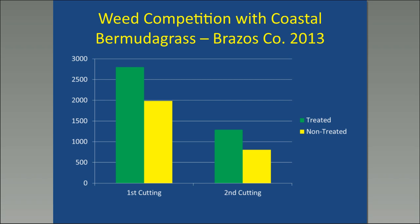So why do we worry so much about weeds? Why do we spend so much time and effort trying to keep weeds out of our fields? This study we did in the Brazos Valley a few years back looked at a coastal bermuda grass field. We used a number of different herbicide treatments to treat broadleaf weeds that were growing there, left some non-treated areas to compare to, then came back at two cuttings during that season to compare forage production in treated versus non-treated areas. We also separated all of the broadleaf weed material out of those cuttings so we could quantify exactly how much weeds were present and what the impact was on forage production.